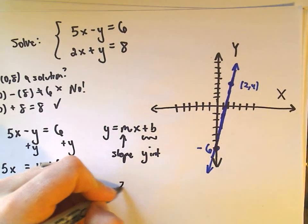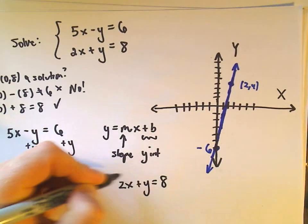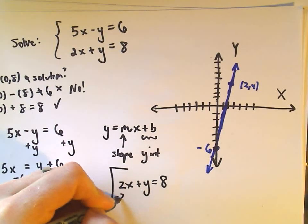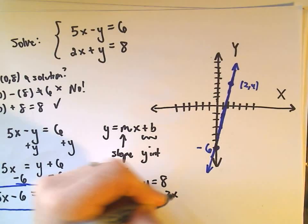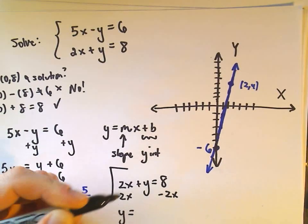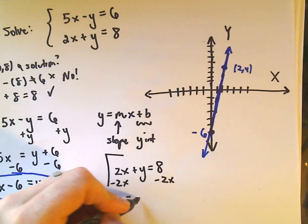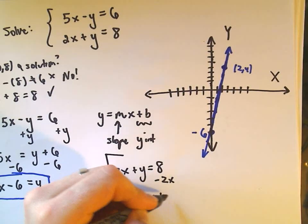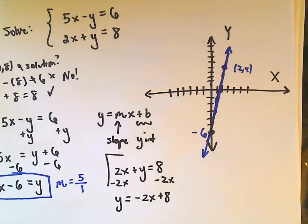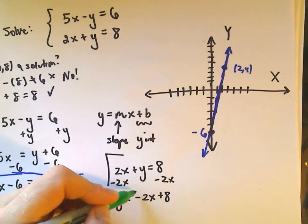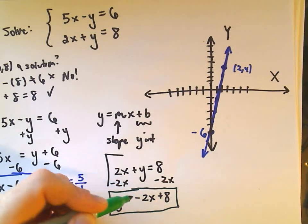2x plus y equals 8. This one's a little bit easier to put in slope intercept form. We can just subtract 2x from both sides. That'll give us y equals, we could write this as 8 minus 2x. I'm going to write it as negative 2x plus 8 just to keep it. I like to put my x out front just so I can see the slope.